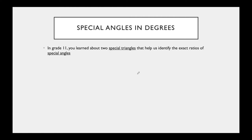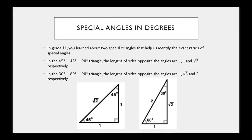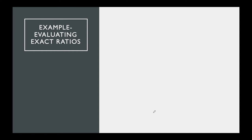Our final topic is special triangles using radians. We already know the 45°-45°-90° triangle with sides 1, 1, √2, and the 30°-60°-90° triangle with sides 1, √3, 2. In grade 12 we simply replace the degree values with radians: 45° becomes π/4, 30° becomes π/6, 60° becomes π/3, and 90° becomes π/2. The only difference is the angle values are now in radians.